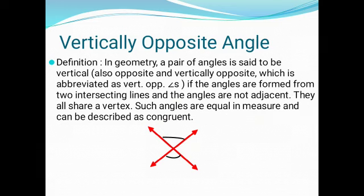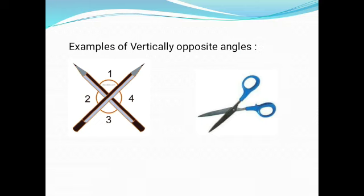Vertically Opposite Angles are those which are formed from two intersecting lines and the angles are not adjacent. Examples of vertically opposite angles are pencils overlapping each other and an open scissor.